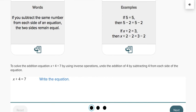To solve the addition equation x plus 4 is equal to 7 by using inverse operations, undo the addition of 4 by subtracting 4 from each side of the equation. Let's take the example. x plus 4 is equal to 7. What do we need to do? Correct. We have to make use of the subtraction property of equality. That means, whatever we're going to subtract on the left side of the equation should be subtracted on the right side of the equation. How do we know the left and the right? The equal sign will determine.